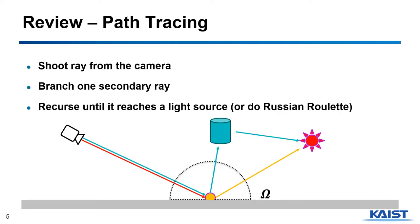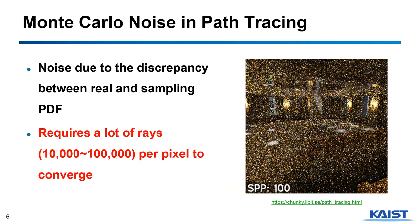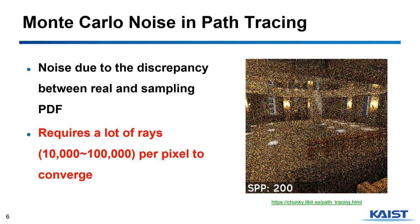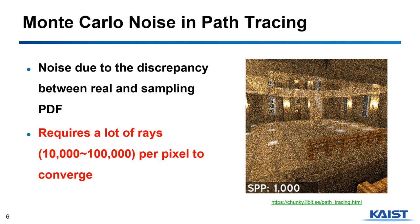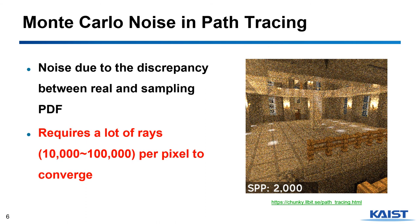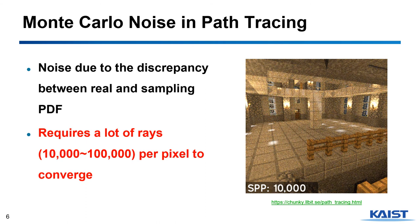On top of Monte Carlo ray tracing, path tracing works as the most intuitive and simple but efficient method. It only generates one secondary ray, requiring multiple rays to accurately estimate the real radiance of the pixel. Also, we have learned the Russian roulette rule for determination of ray propagation. Unfortunately, there are noises in the result of path tracing due to the discrepancy between the probability distribution of the real function and the sampling function.